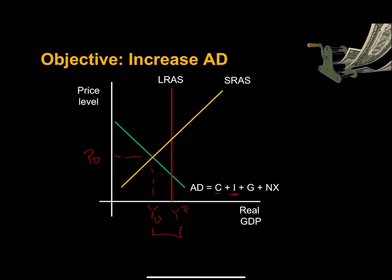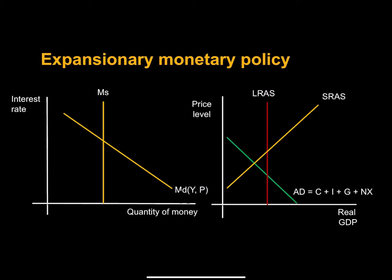Let's take a look at our liquidity preference model. We start out with some baseline interest rate R0. The economy is here in recession, with real GDP below potential. Suppose the central bank would like to reduce the interest rate, choosing some target R1.